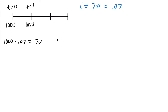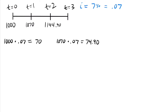Moving into year two, we have $1,070. Multiplying that by our interest rate to see how much we'll have at the end of year two, we earn $74.90 of interest. Adding that to $1,070, we have $1,144.90 at the end of year two. For year three, we have $1,144.90 multiplied by 0.07, giving new interest of $80.14. Adding that to our year two total, we get $1,225.04 at the end of year three.